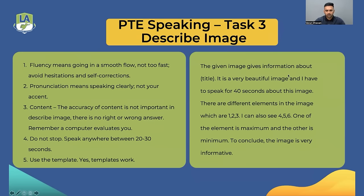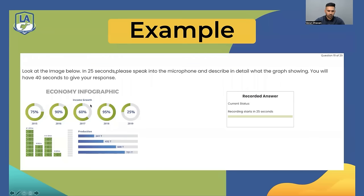This is the template you can use: 'The given image gives information about [title]. It is a very beautiful image and I have to speak for 40 seconds about this image. There are a lot of different elements in the image which are [keyword 1], [keyword 2], and [keyword 3]. I can also see [keyword 4], [keyword 5], and [keyword 6]. One of the elements is maximum and the other one is minimum. To conclude, the image is very informative.'